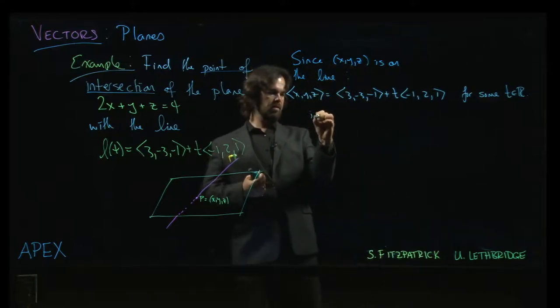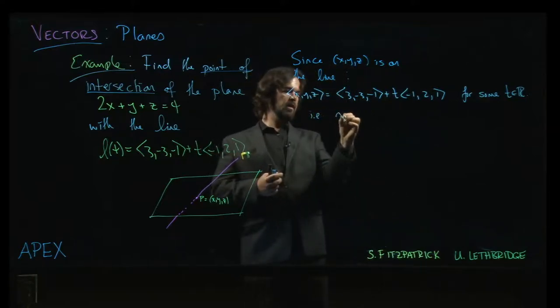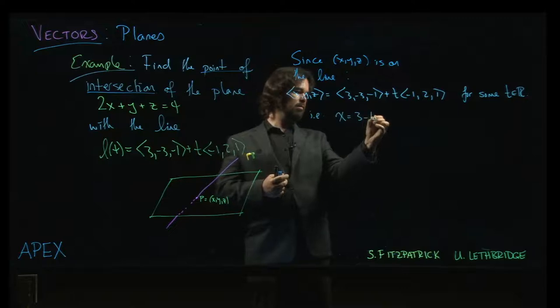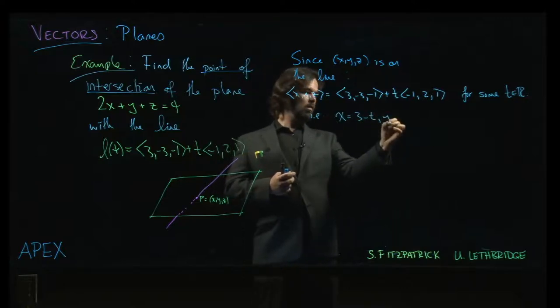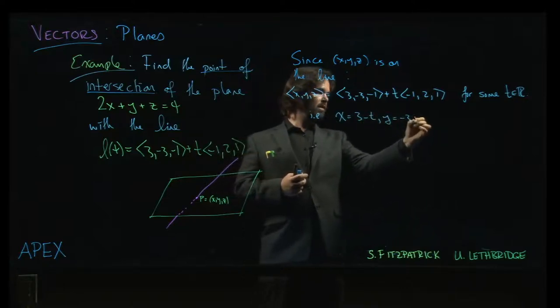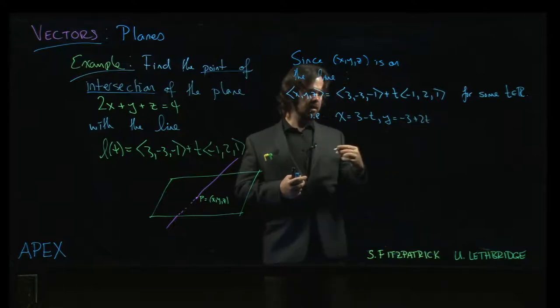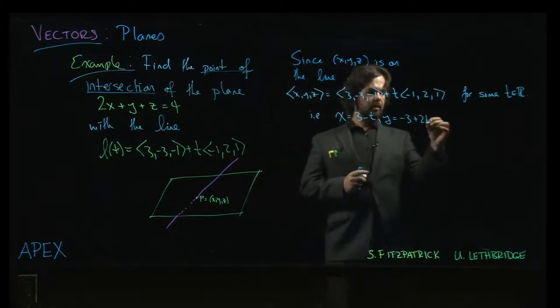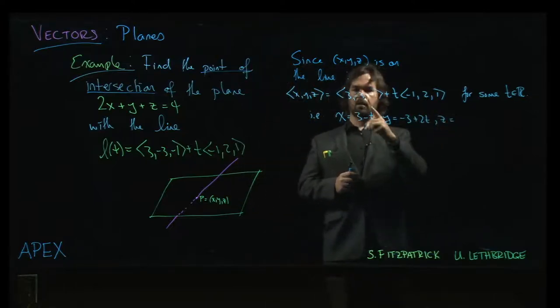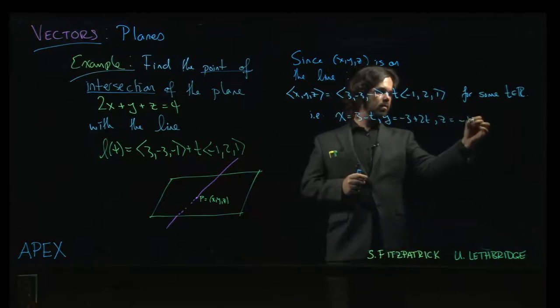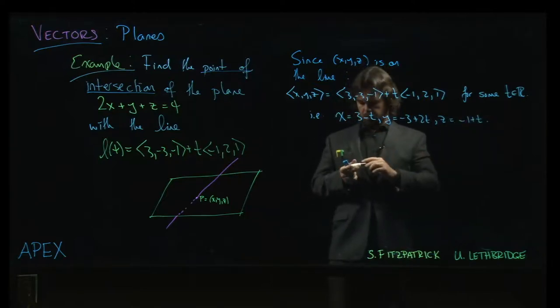Or, in other words, in parametric form, x is going to be 3 minus t, y is -3 plus 2t, and z is -1 plus t.